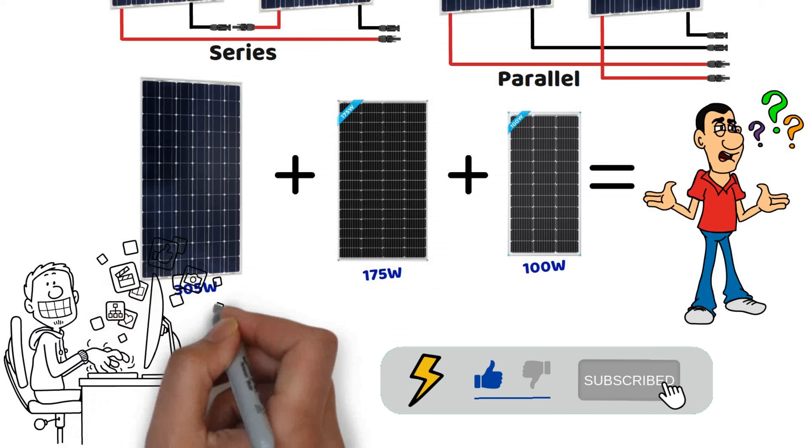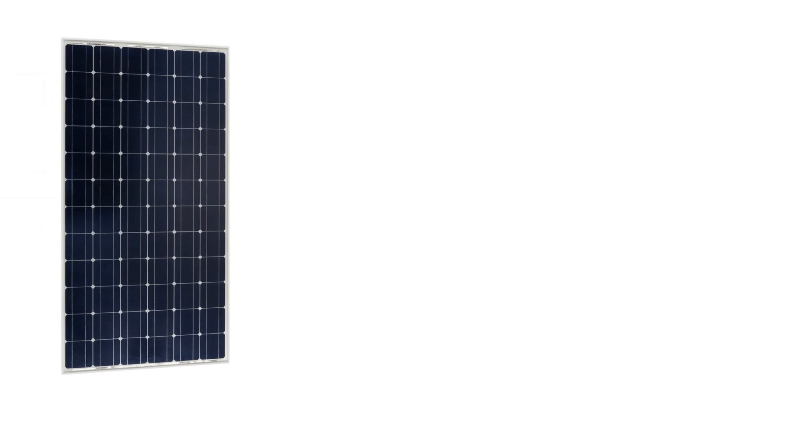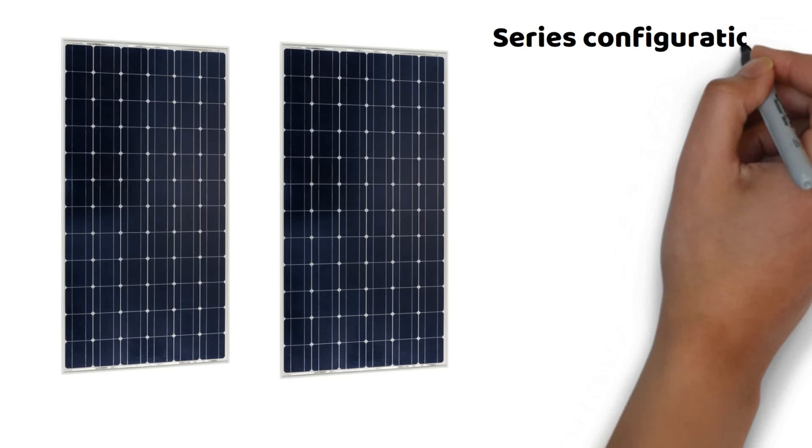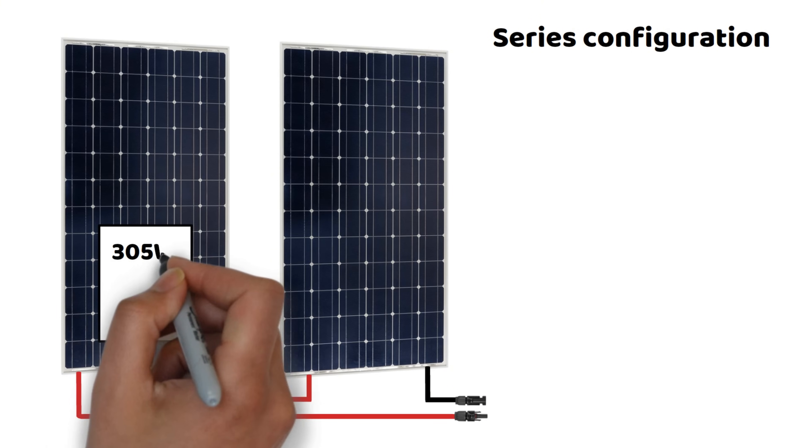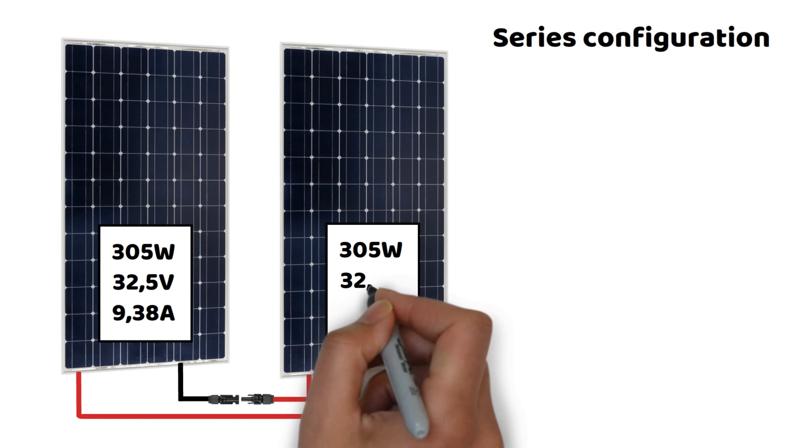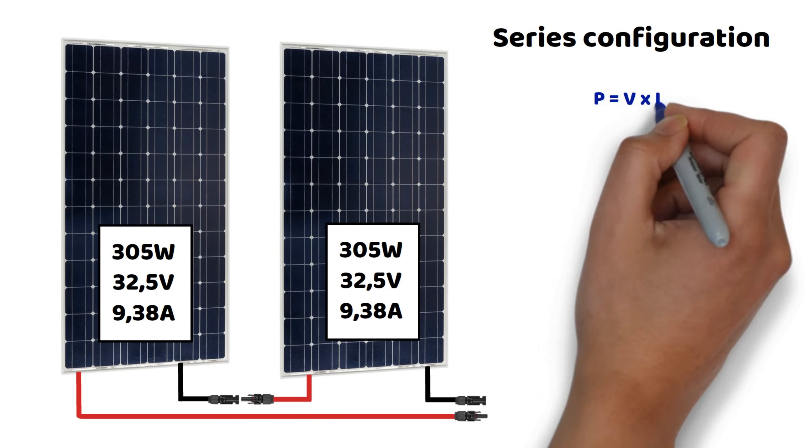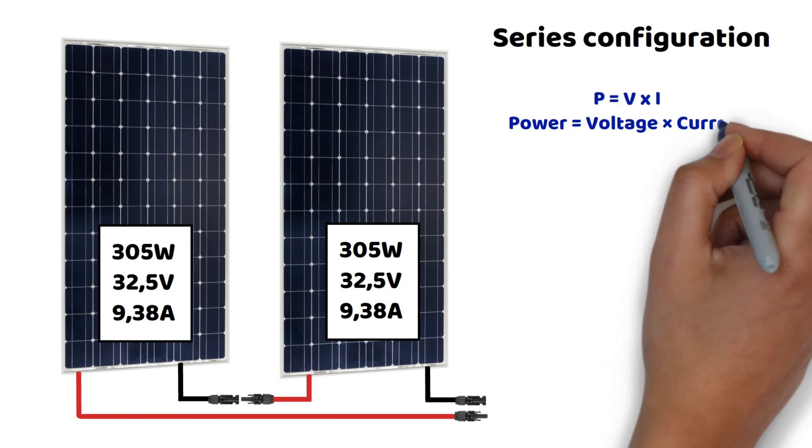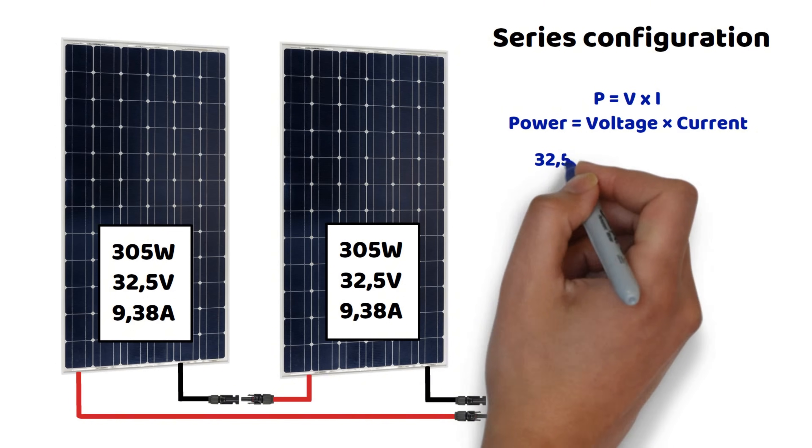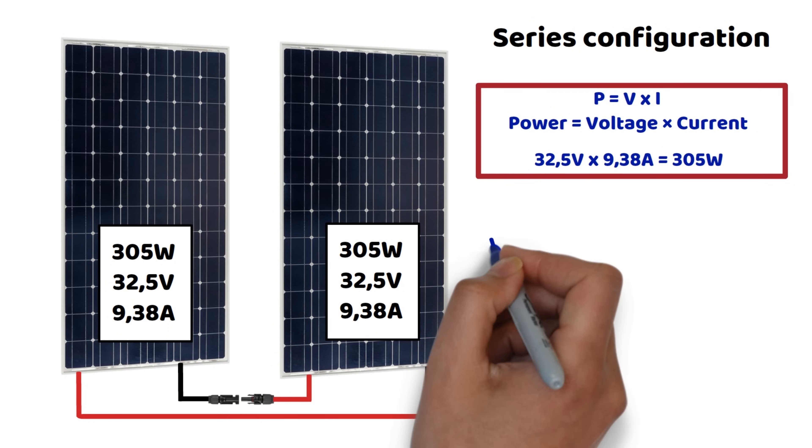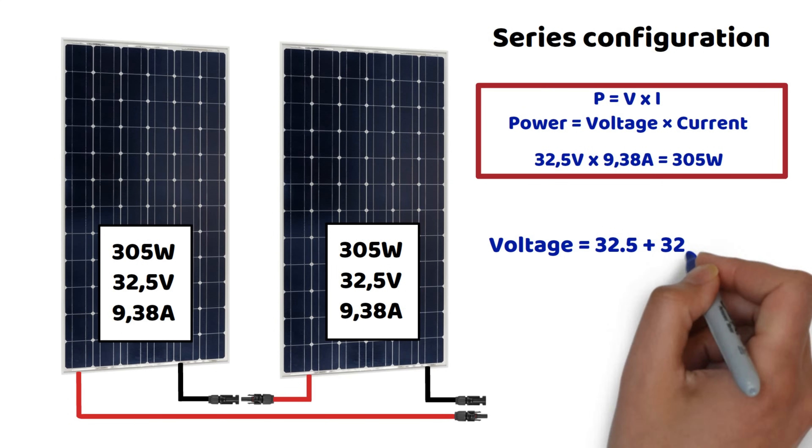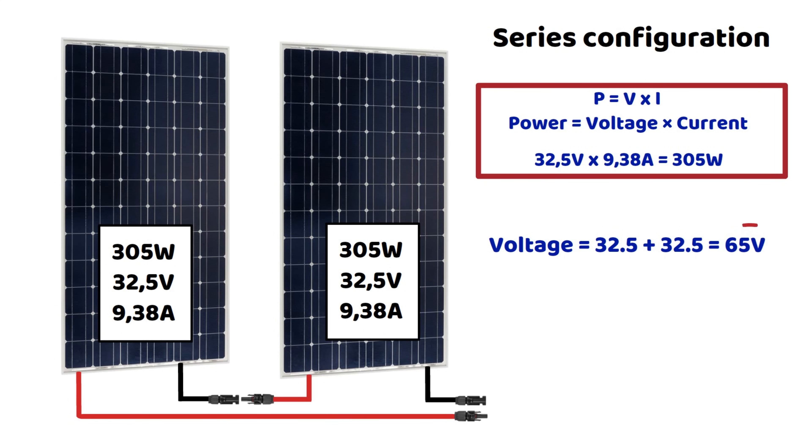Before diving into examples of connecting panels with different characteristics, let's first review the basics of a series connection with two panels, each with a power of 305 watts, a voltage of 32.5 volts, and a current of 9.38 amps. Quick reminder, using the formula P equals V times I, 32.5 volts multiplied by 9.38 amps indeed equals approximately 305 watts. In a series connection, the voltages add up, while the current in amperes remains constant regardless of the number of panels in the series. In this specific case, we will therefore have a voltage of 65 volts and a current of approximately 9.38 amps. The power, in turn, will be 610 watts.